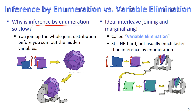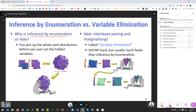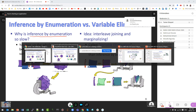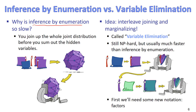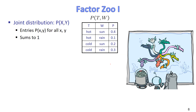Any questions about this idea? So to implement variable elimination, we need to introduce new notation called factors. We'll start with what is called the factor zoo, because we'll have different factor types.